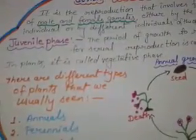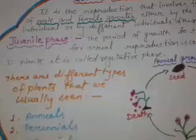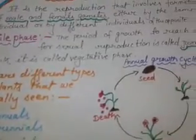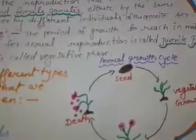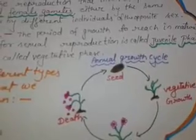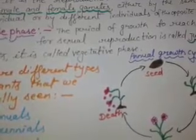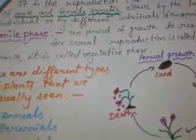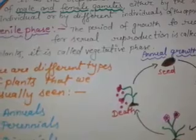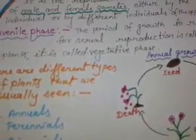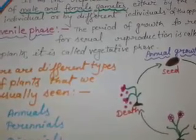Next, we will discuss about the different growth phases. Juvenile phase: the period of growth to reach maturity for sexual reproduction is called juvenile phase. Students, you must see yourself and people around you changing from very small size to old age. That is the process that occurs in our body which pushes us from one phase to another.